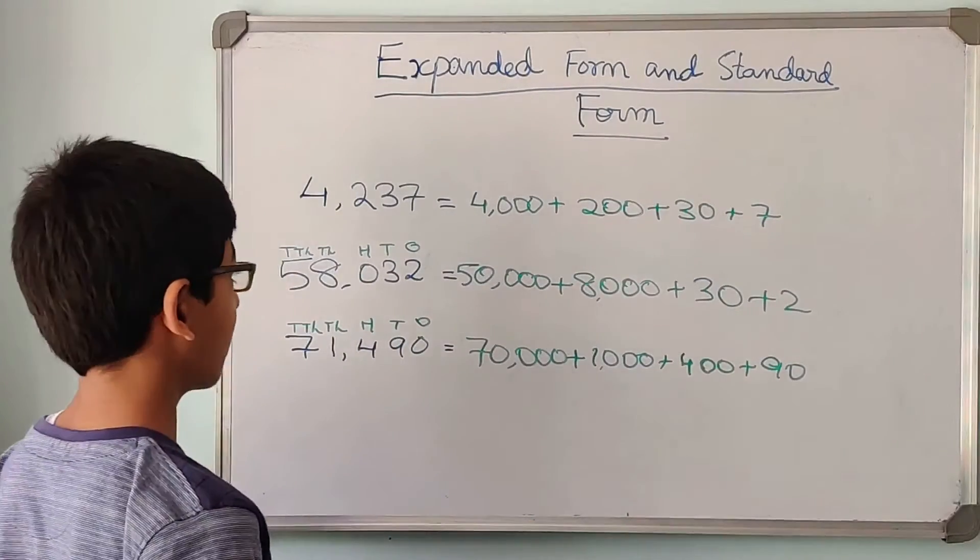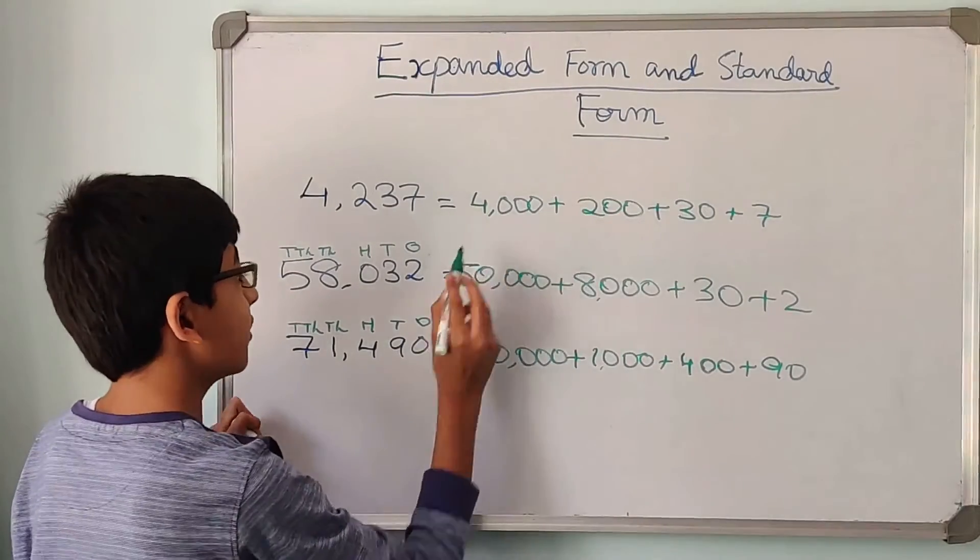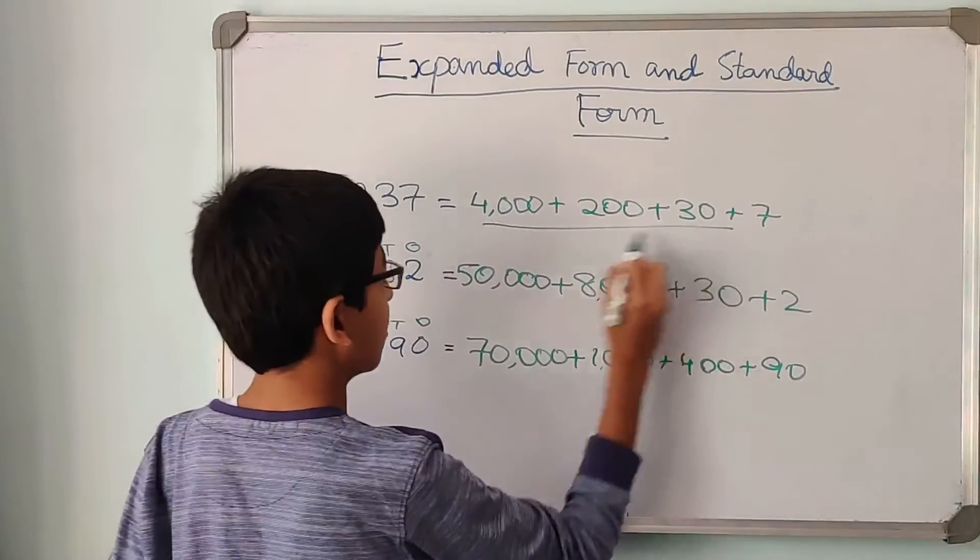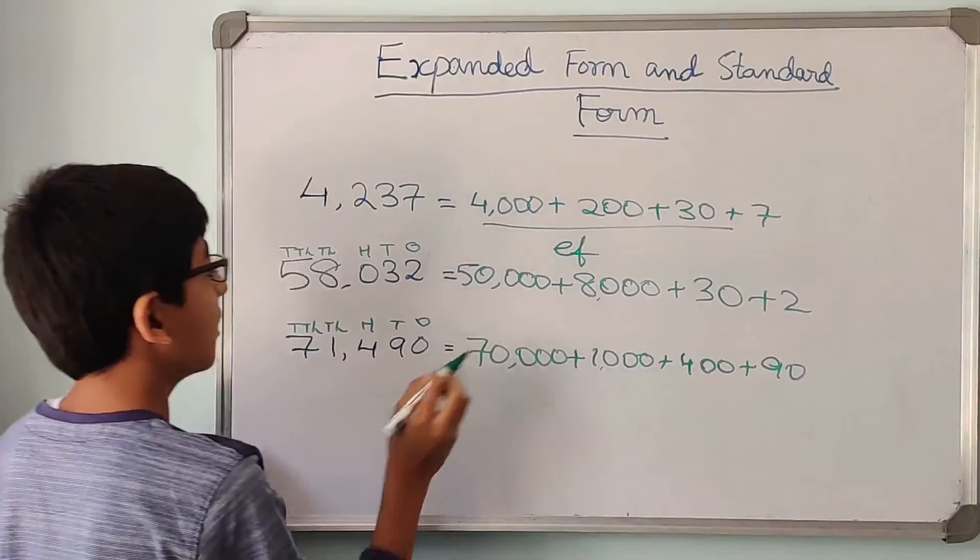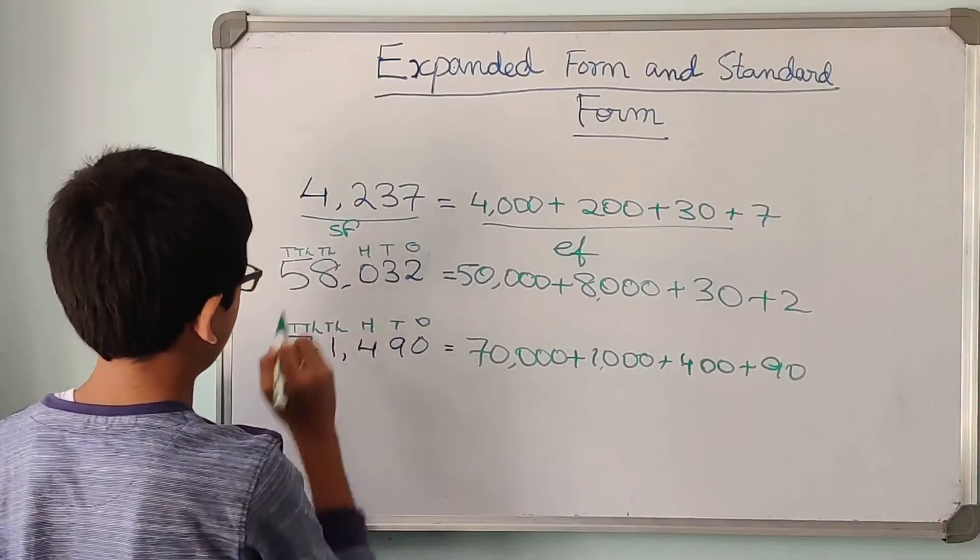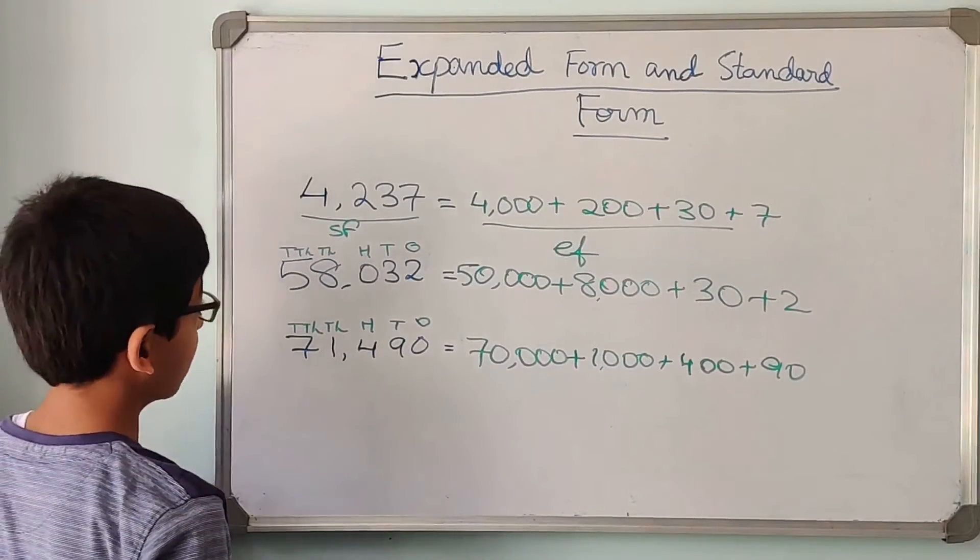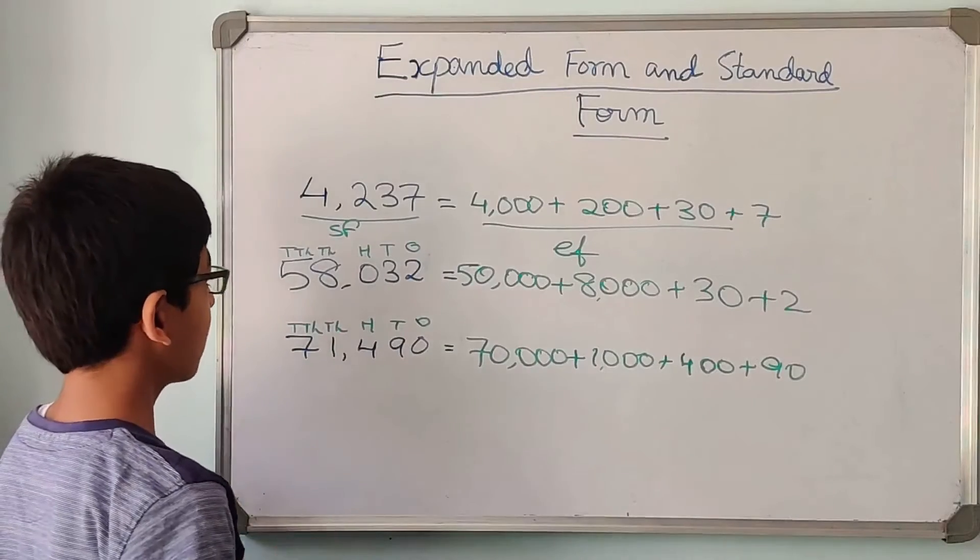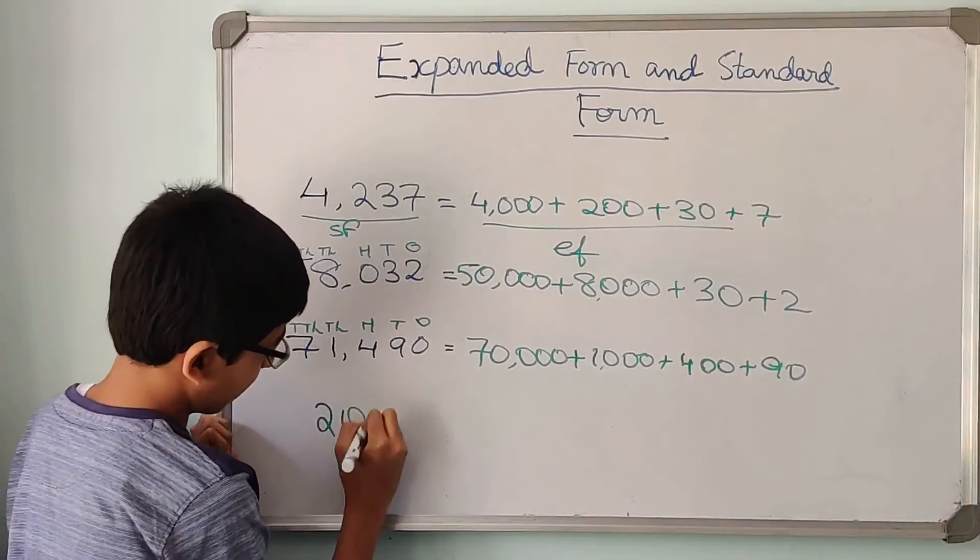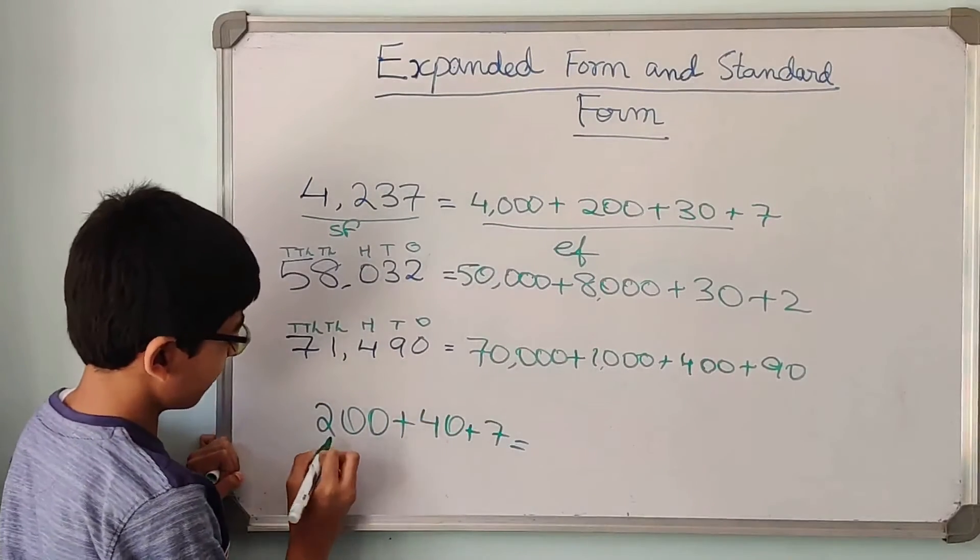Now let us know what our standard form is. What is our standard form? Sometimes we are given the expanded form and we have to find the number. And this is known as the expanded form. And once we find the number, what it is, the number is known as the standard form. So sometimes we are given the expanded form and we are asked to find the standard form. So let us write one example right over here.